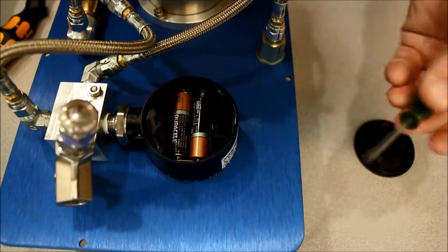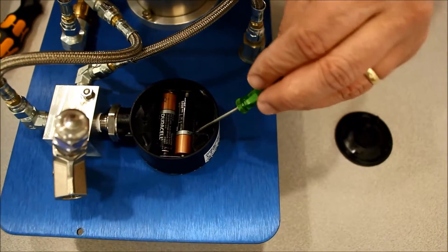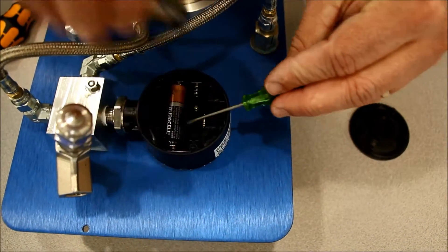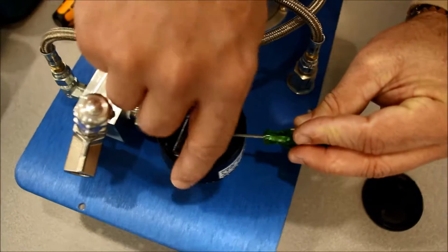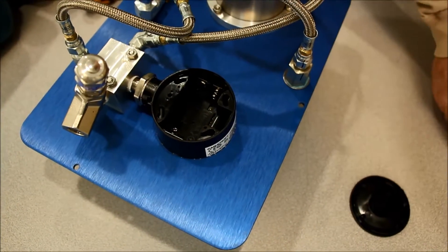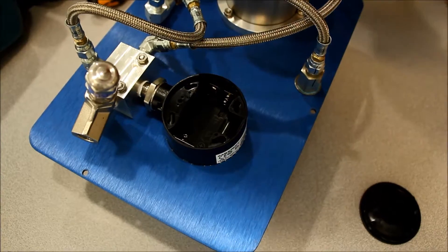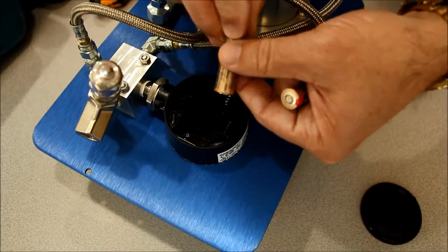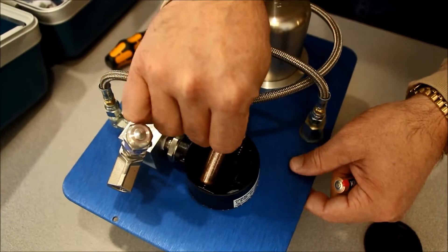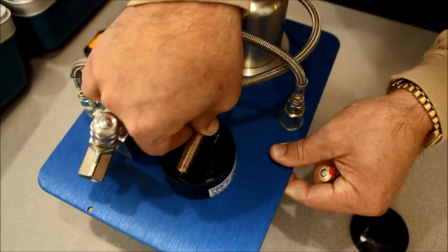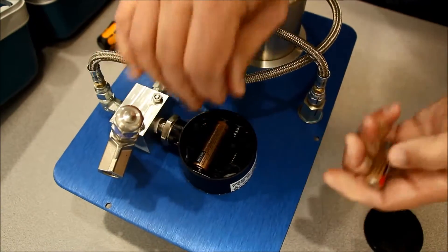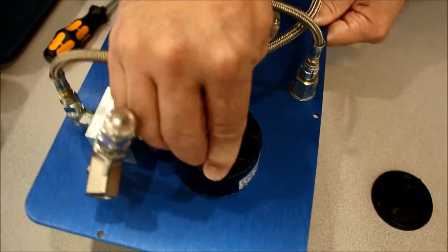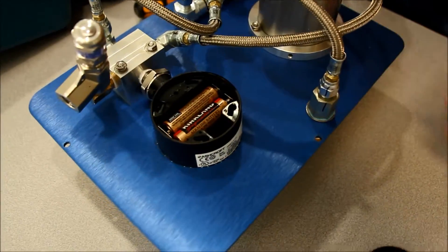We're going to use a little screwdriver or something just to pop those loose. Take out those batteries. Then we're going to replace them with the negative end down at the spring. Pop the new ones in.